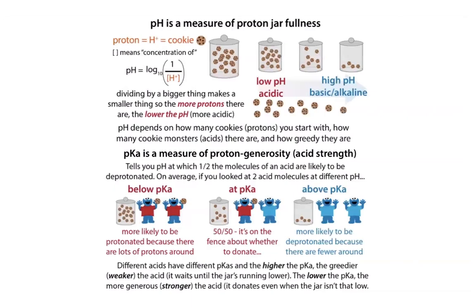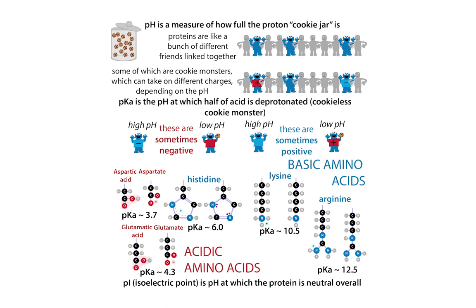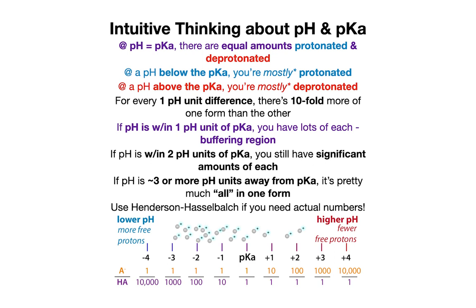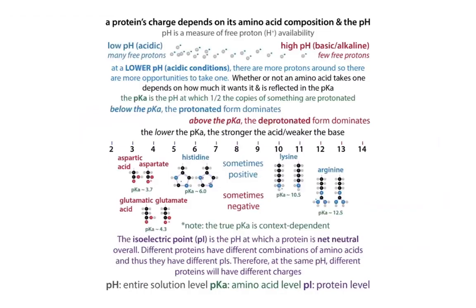Think of acids as cookie monsters where pKas represent the strength of a single cookie monster. In a protein, there's a bunch of cookie monsters lined up — some are acids and some are bases. The overall charge of the protein depends on the relative makeup of acids and bases and the pH. At a lower pH there's more protonation and things are more positively charged. At a higher pH there are fewer protons, so less protonation and you get a net negative charge.